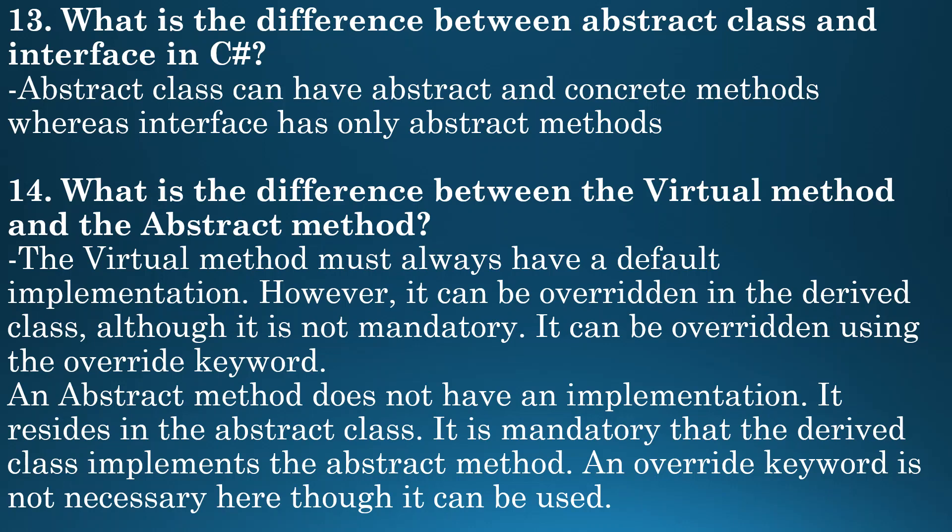Next question: what is the difference between a virtual method and an abstract method? The virtual method must always have a default implementation; however, it can be overridden in the derived class, though it is not mandatory. It can be overridden using the override keyword. An abstract method does not have an implementation — it resides in the abstract class, and it is mandatory that the derived class implements the abstract method. An override keyword is not necessary here, though it can be used.